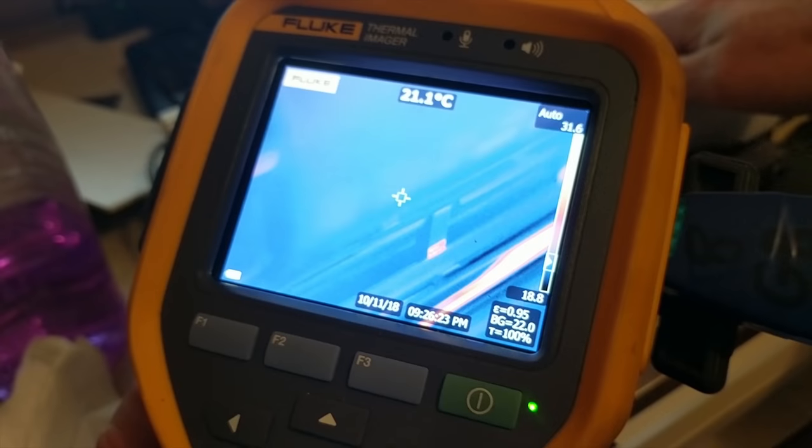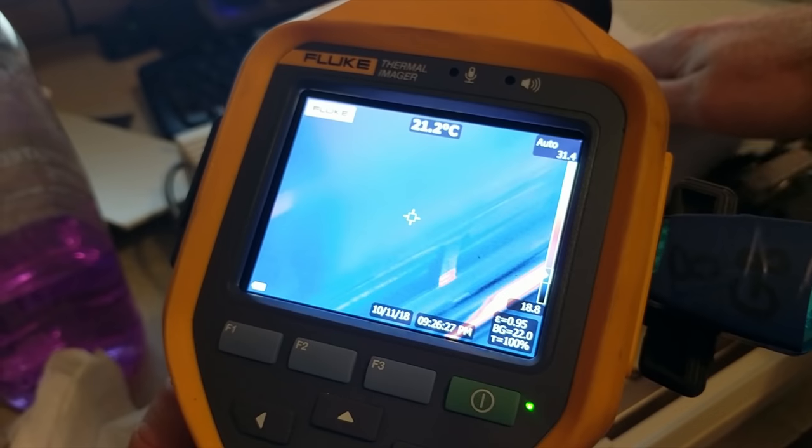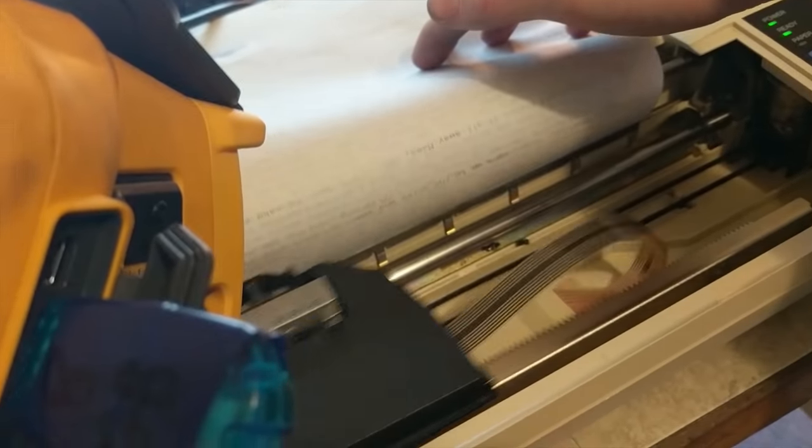What up YouTube, TK here and today we're looking at re-inking dot matrix printer ribbons. Cosmos 2000 and I have been playing with old printers and their ribbons do tend to dry out after a few decades.